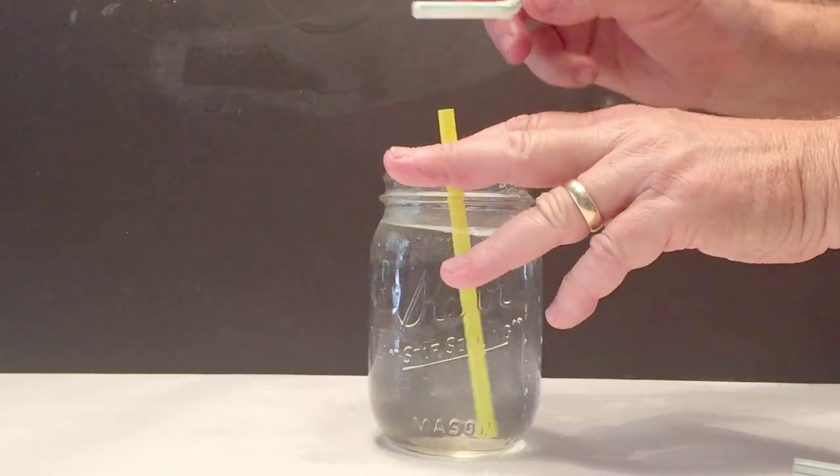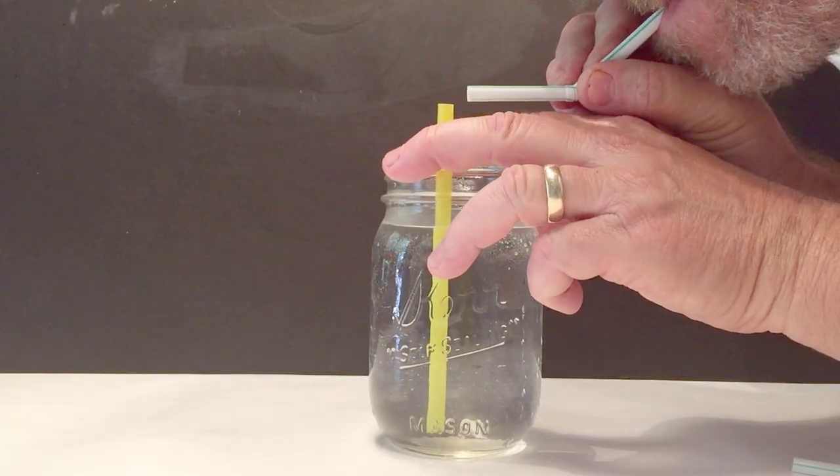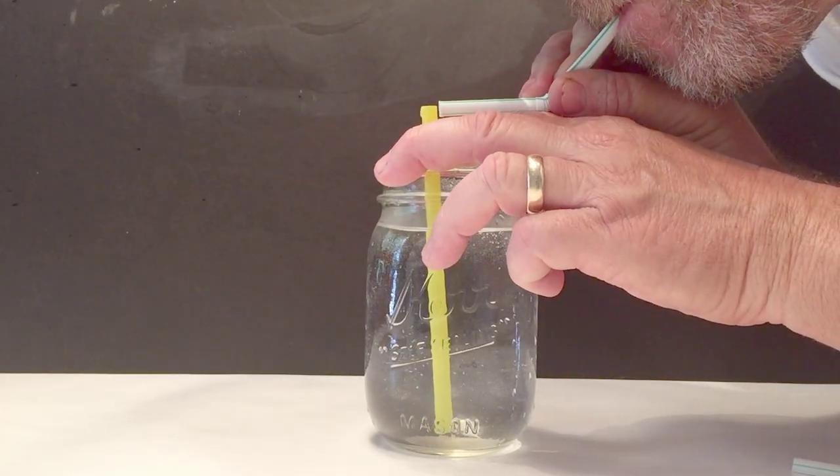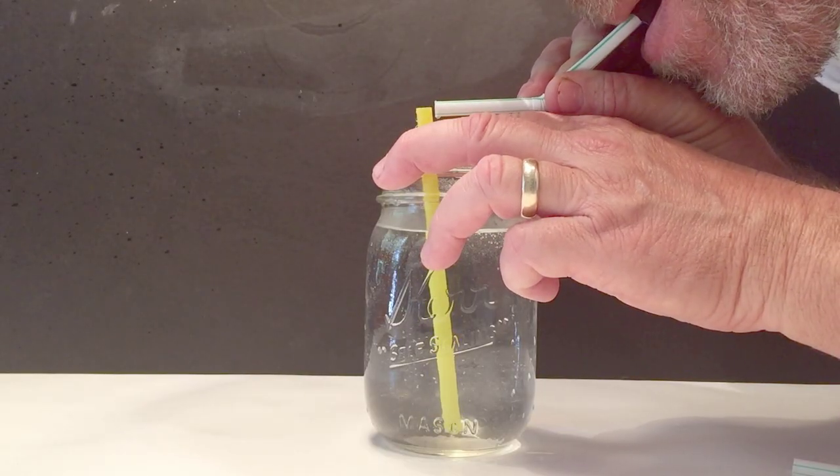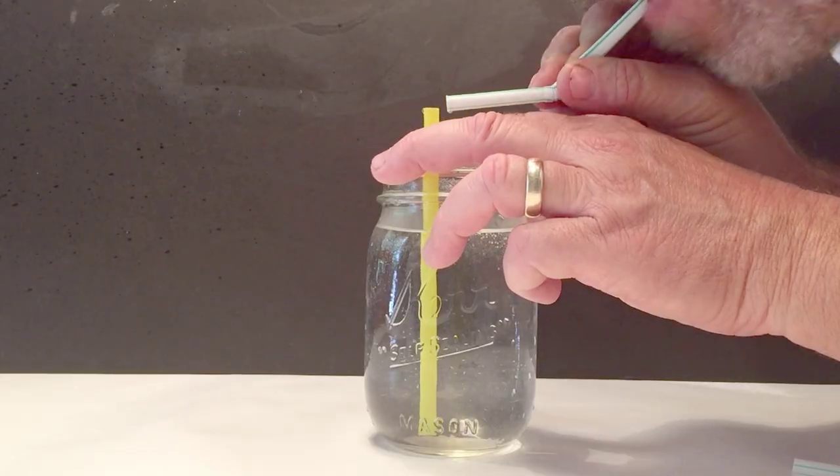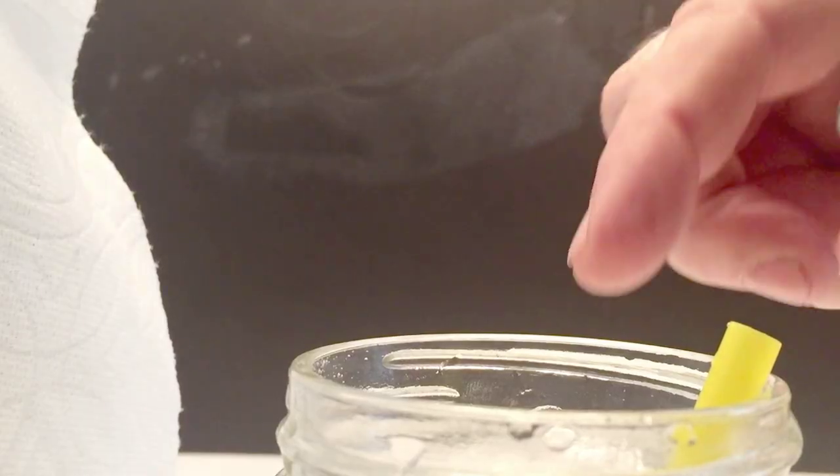And then you're going to hold the straw between two of your fingers and you're going to hold the bendy straw right above the other straw just like this. And you're going to start blowing right above the straw that is in the water. Hence the name the straw mister.